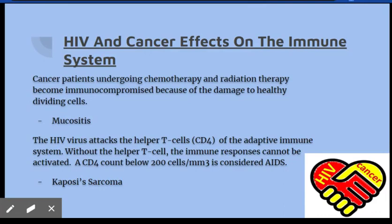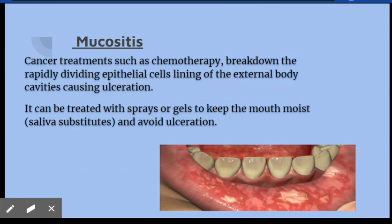Cancer patients can develop a condition called mucositis. In HIV positive patients, if not being treated for the condition, they can become immunocompromised if the condition progresses to AIDS. They can also be at greater risk of developing a condition called Kaposi's sarcoma, and that is one of the signs that a patient has become immunocompromised.